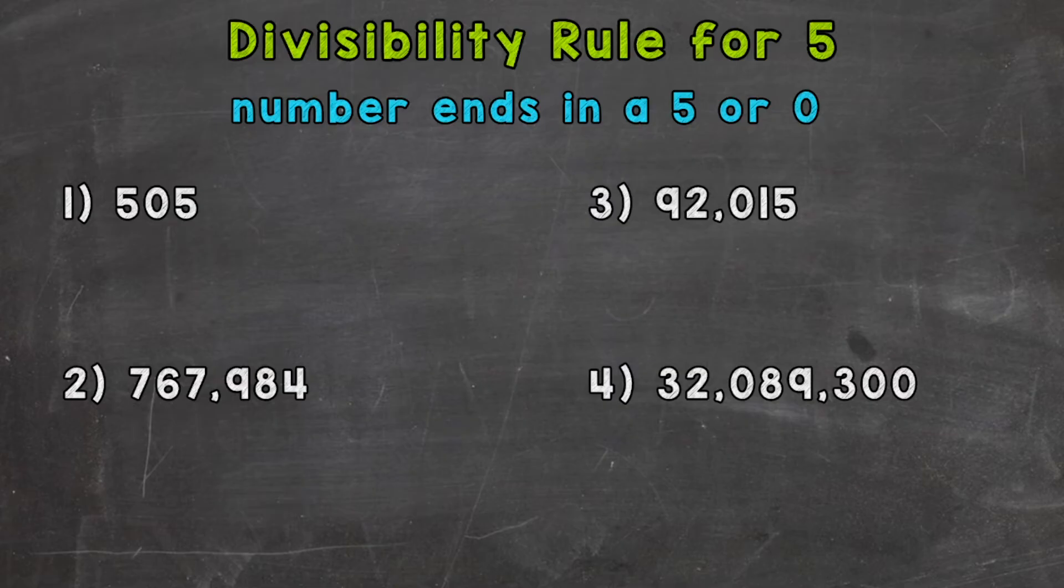Number one, we have 505. So let's see what it ends in. It ends in a 5, therefore that number is divisible by 5.